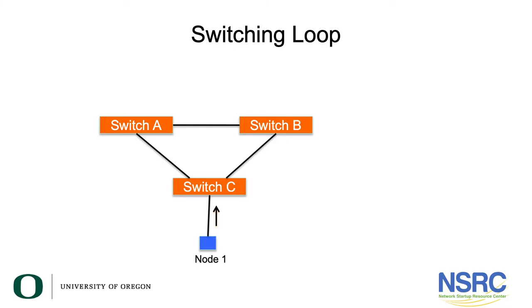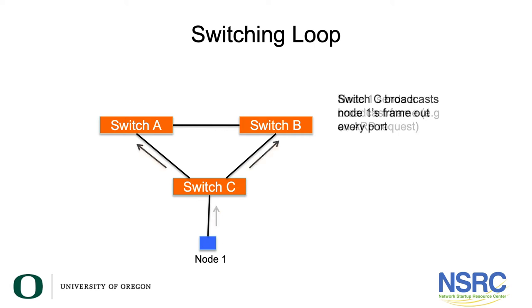Let us look at a detailed example of how this broadcast storm works. In this diagram we have three switches: Switch A, Switch B, and Switch C. Node 1 is connected to Switch C at the bottom and it sends a broadcast packet — for example, an ARP request. Because it's a broadcast packet, meaning the destination MAC address is all Fs, Switch C is going to broadcast Node 1's frame out of every port except the one it received it on, where Node 1 is.